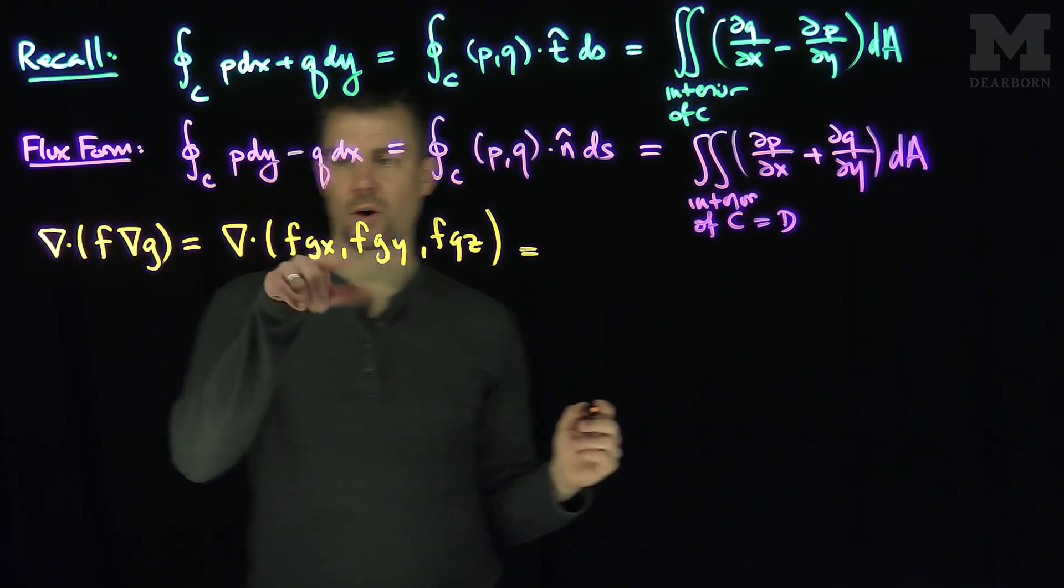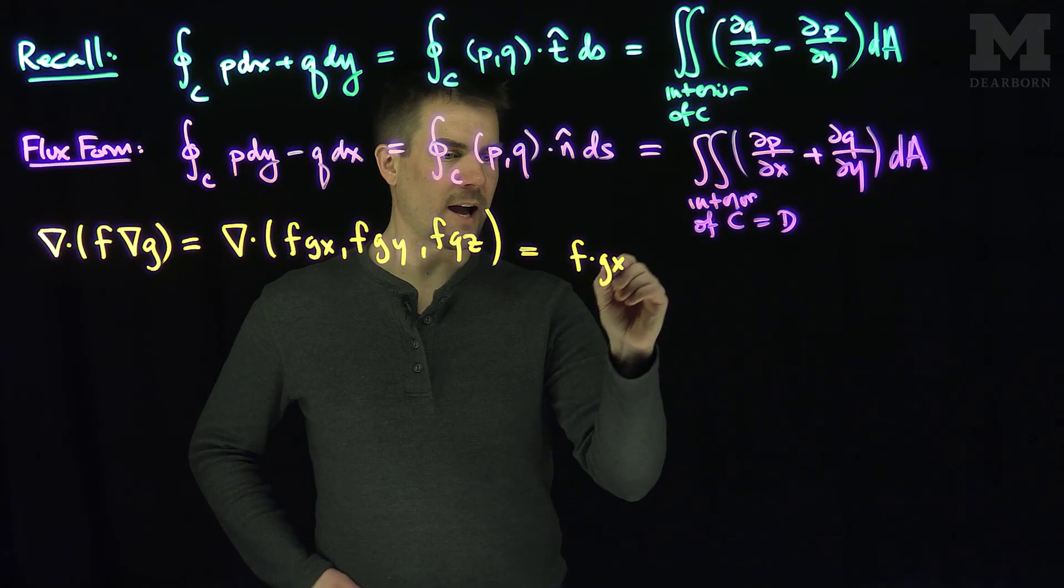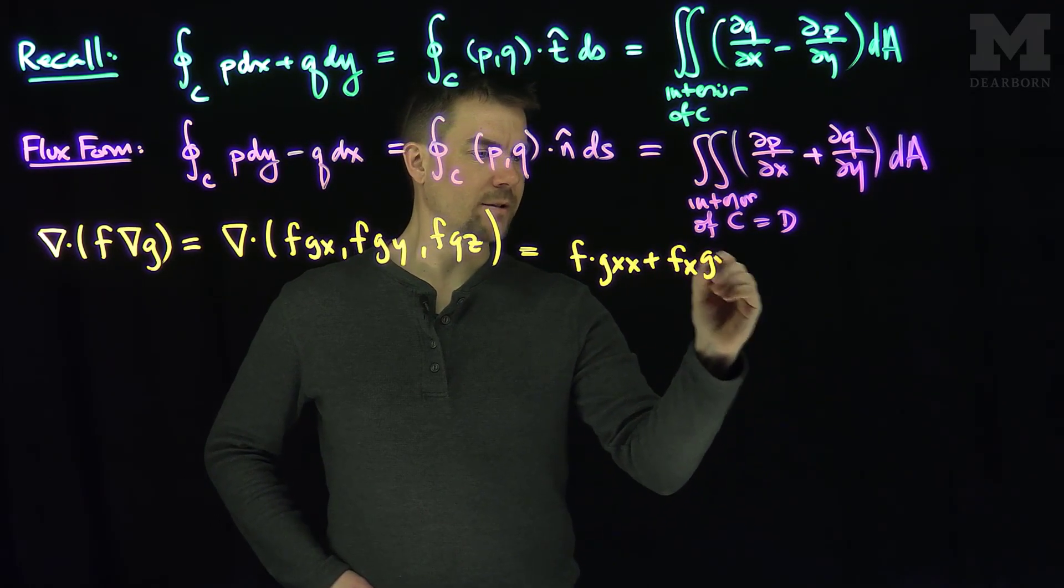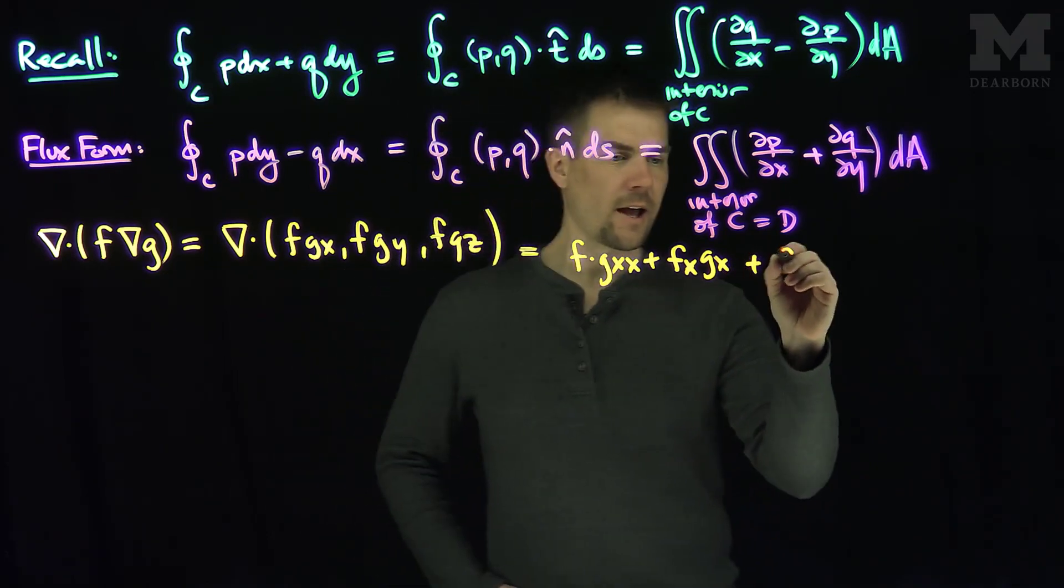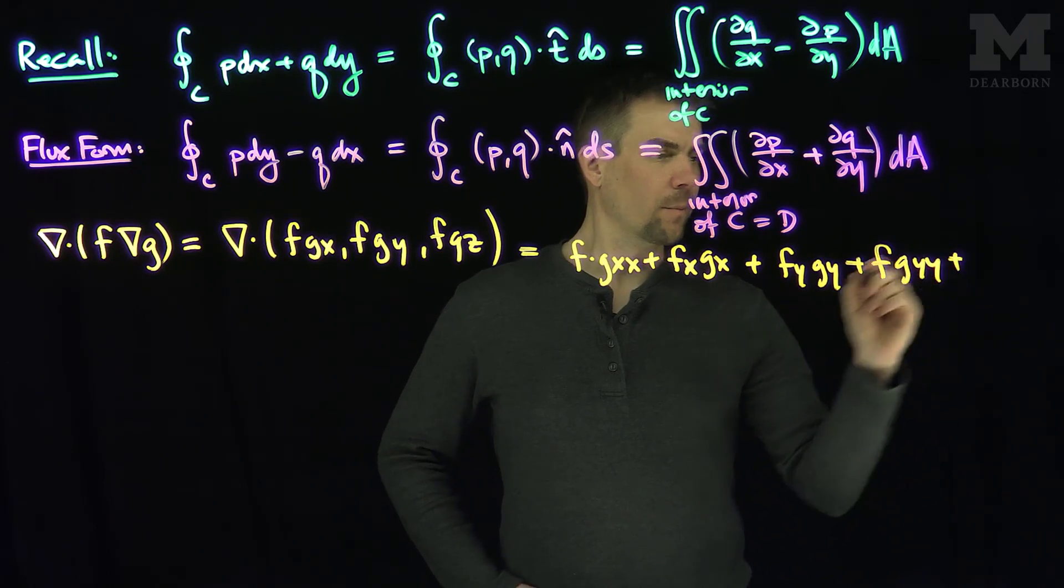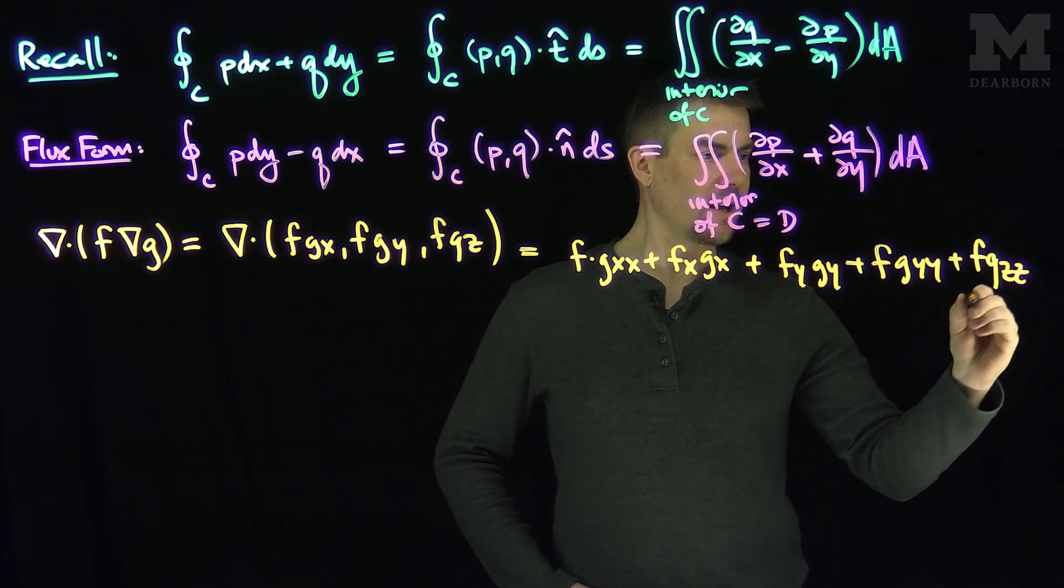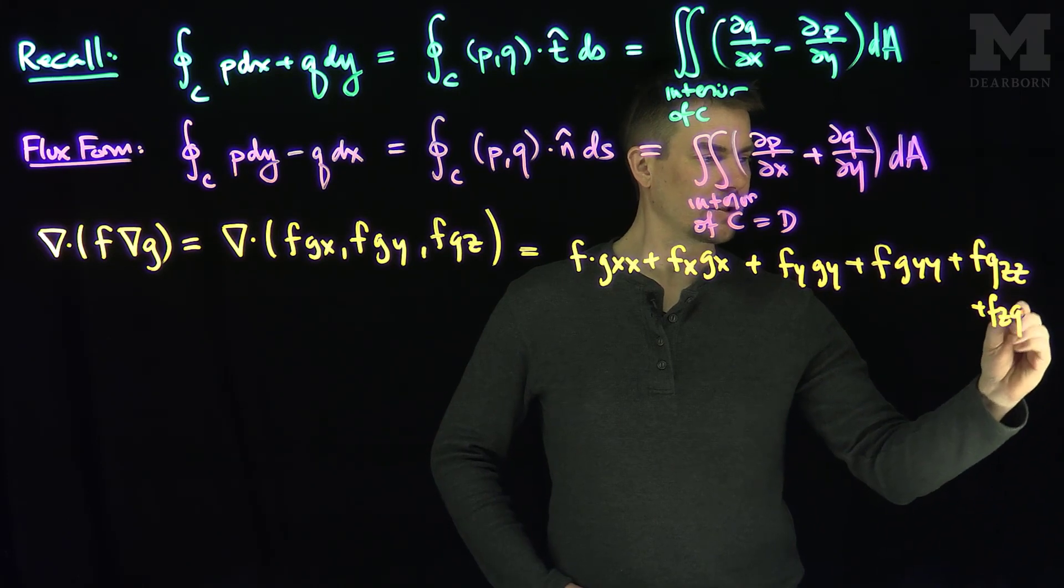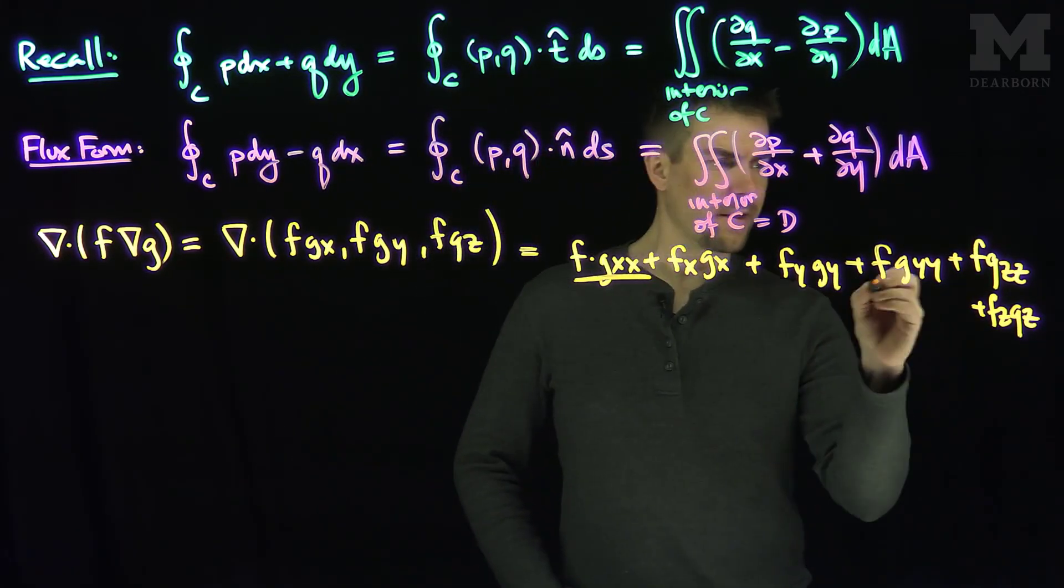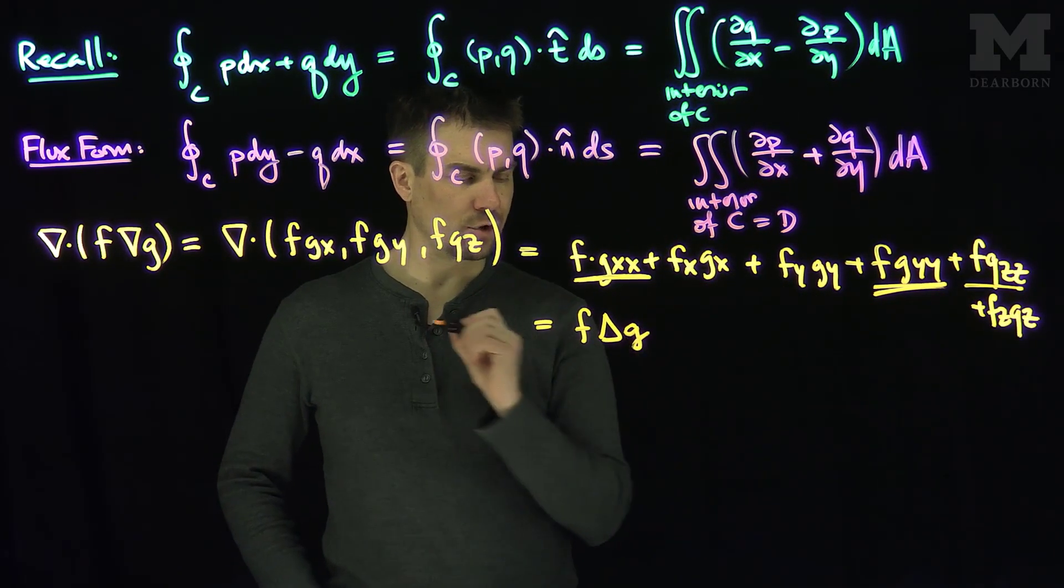And so I'm gonna product rule each of these things. If I do the x derivative of the first term, I'm going to have f times gxx plus fx gx plus fy gy plus f gyy plus the last two terms are gonna be f gzz plus fz gz.